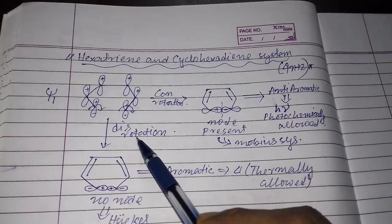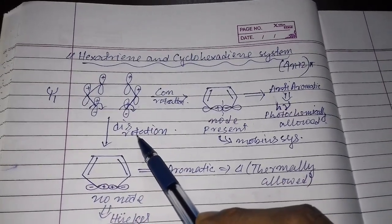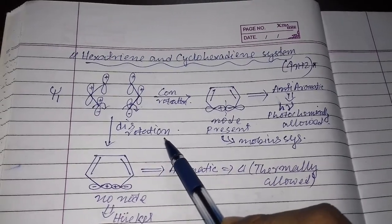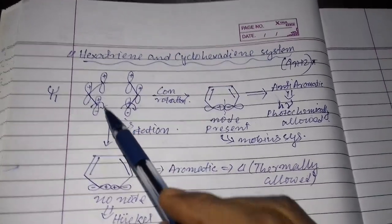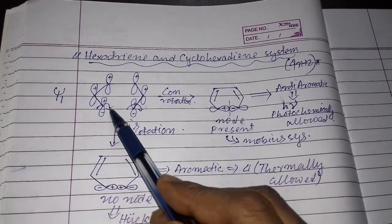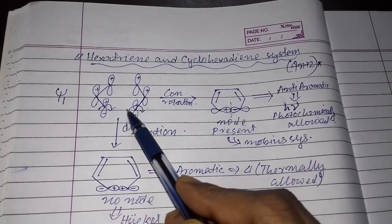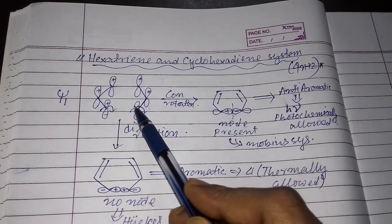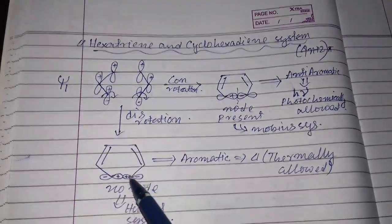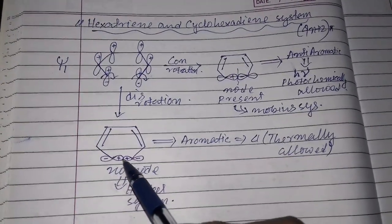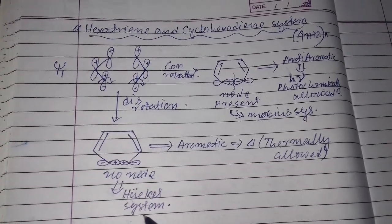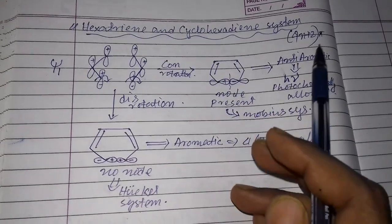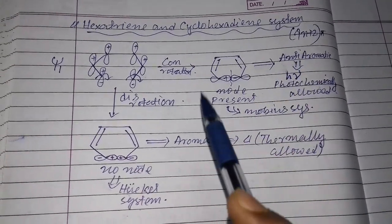Now for the disrotatory process: the orbitals rotate in opposite directions, so two positive lobes come together — no node is present. This is a Hückel system. According to Hückel's theory, the 4n+2 pi electronic system is aromatic, meaning the disrotatory process is thermally allowed.